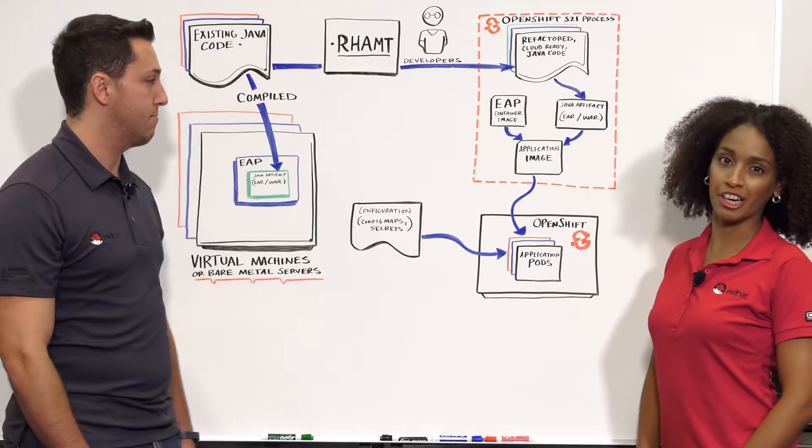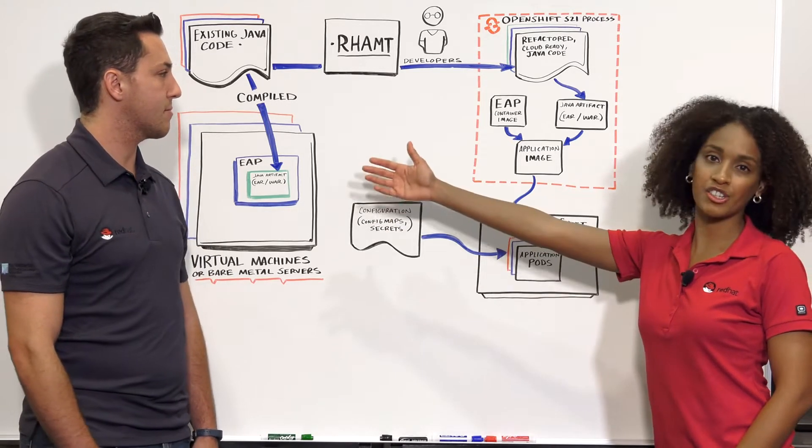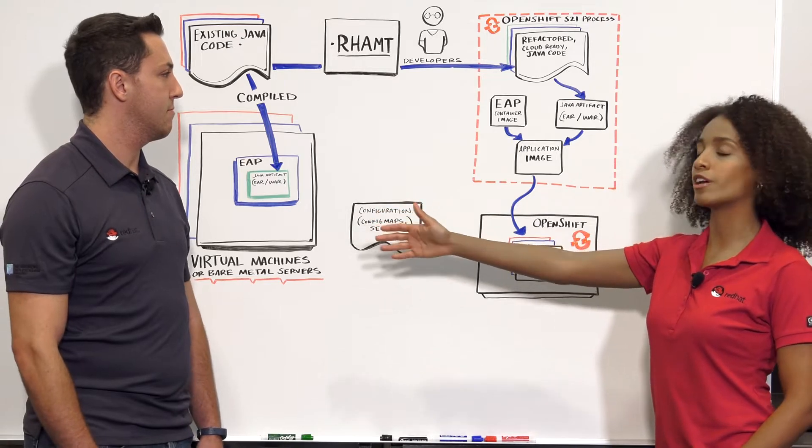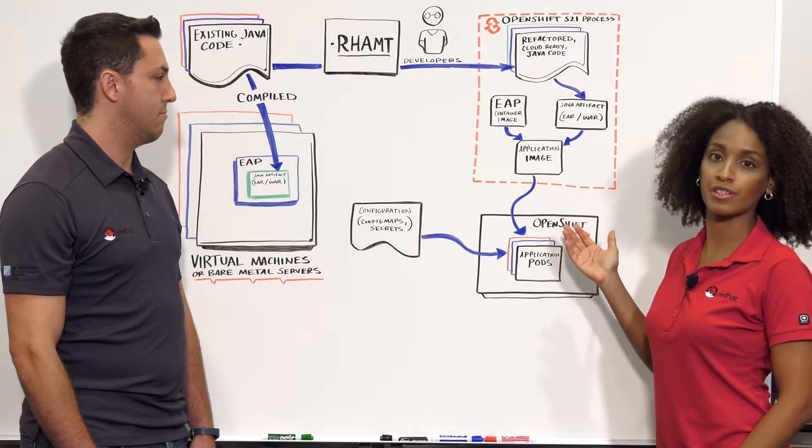And on today's whiteboarding video, we're going to show you how to move your existing Java EE application on JBoss EAP to running a containerized version on OpenShift.